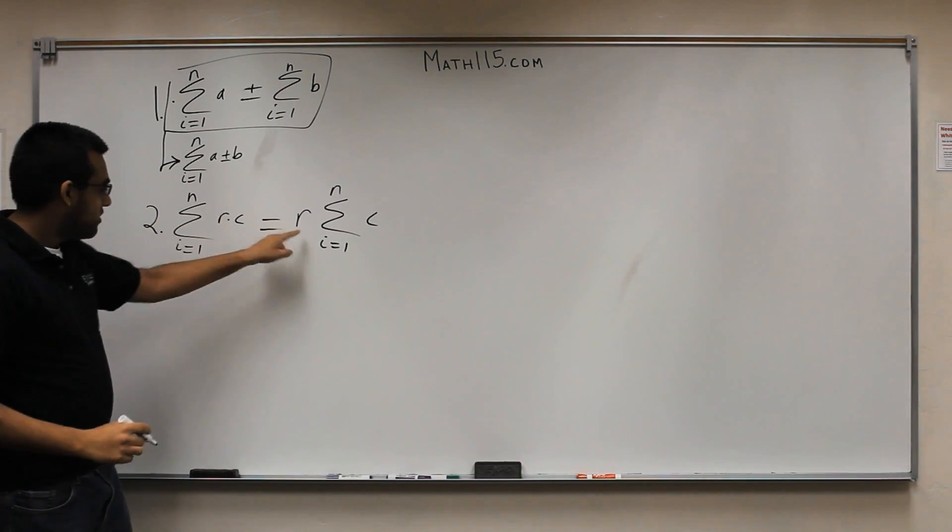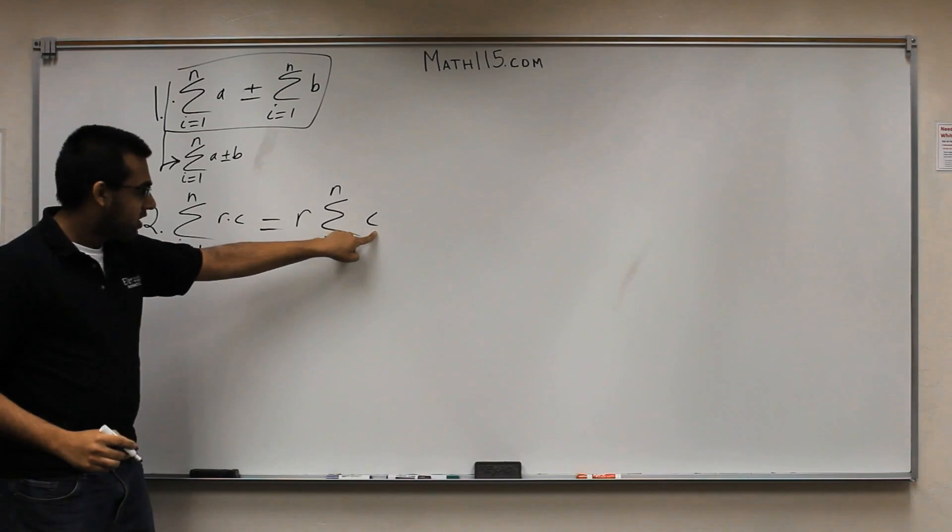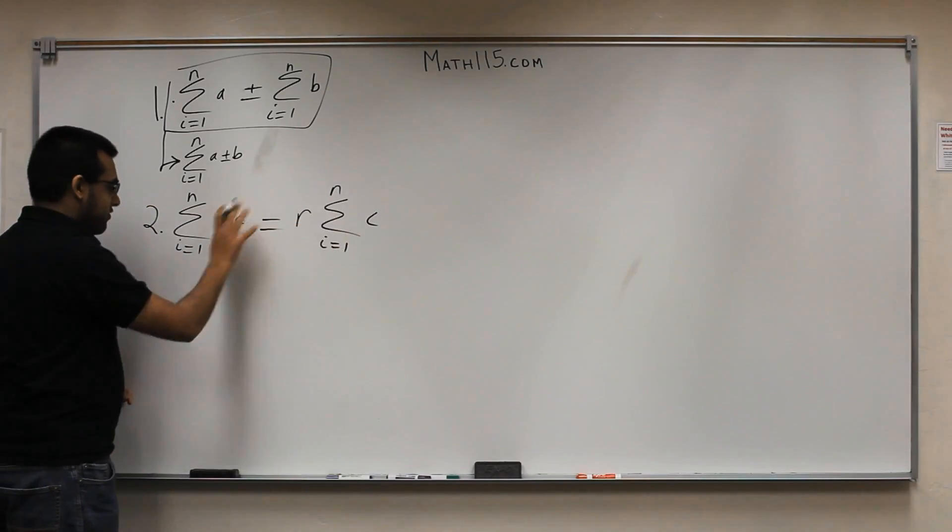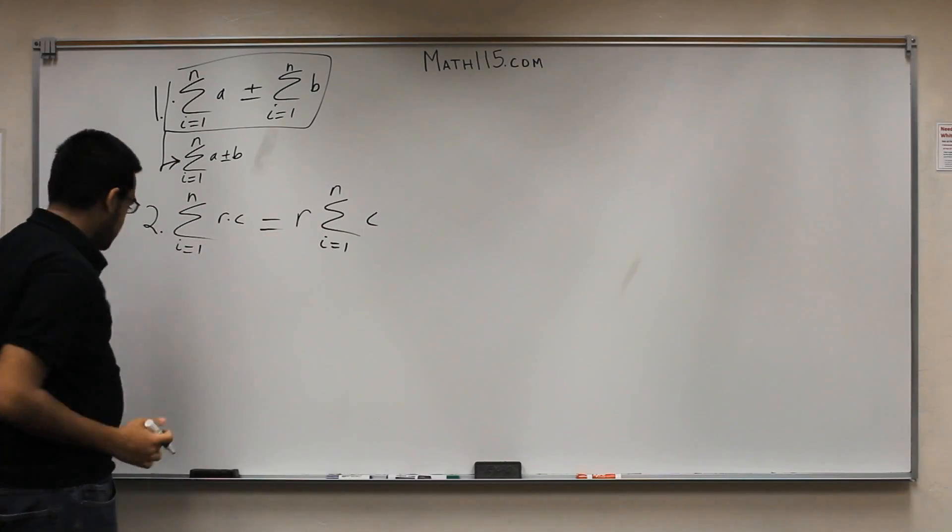So, what you can do with this is this right here. This whole thing is equal to r summation i equals 1 to n c. So, all I did was pull the r out and put it in front of the summation. And then, you're left with just the constant inside. So, again, you can do this vice versa. If you wanted to bring this back in, you could do that. So, they work both ways.